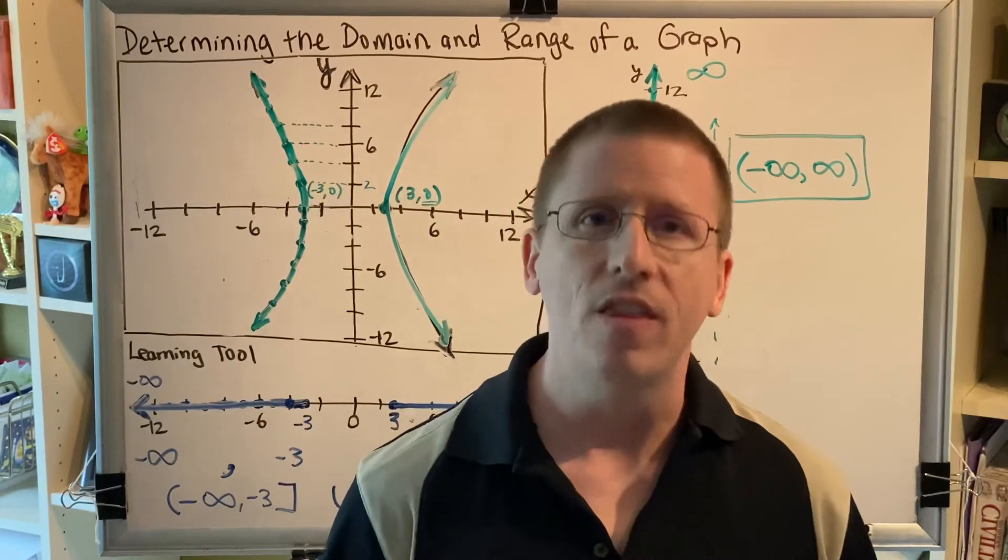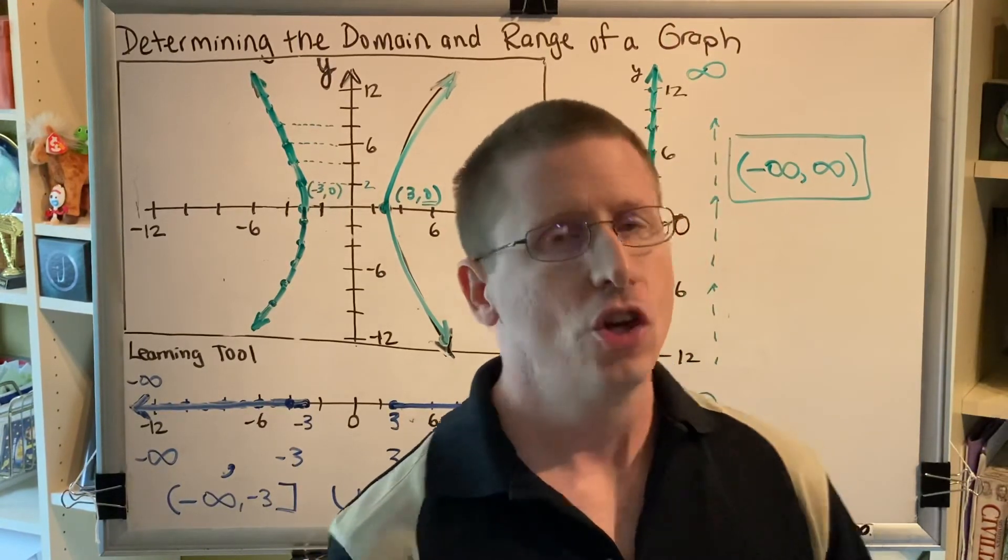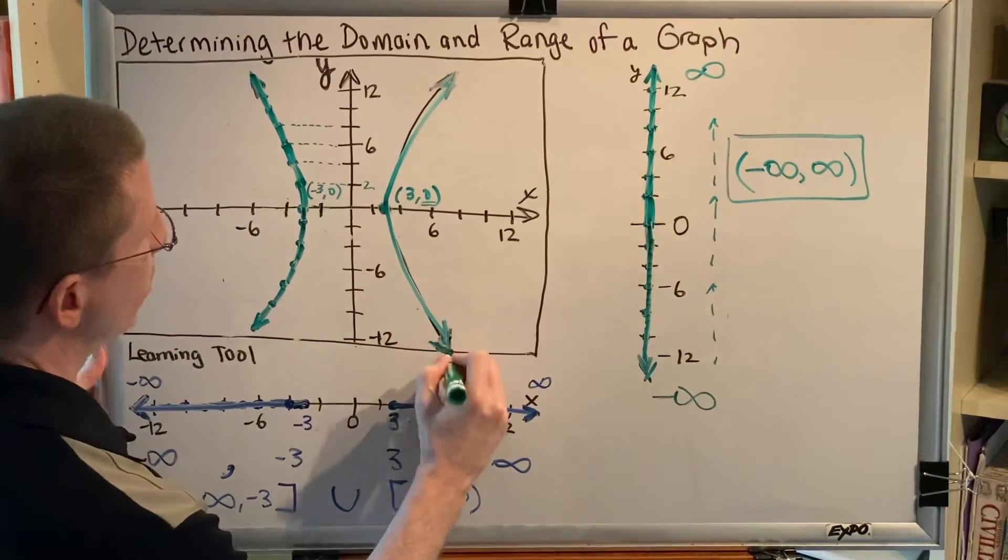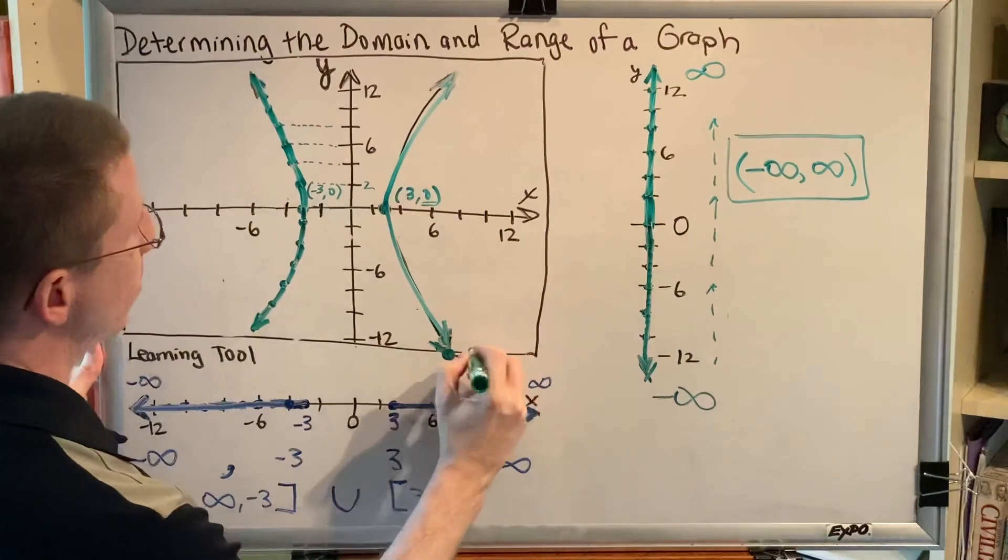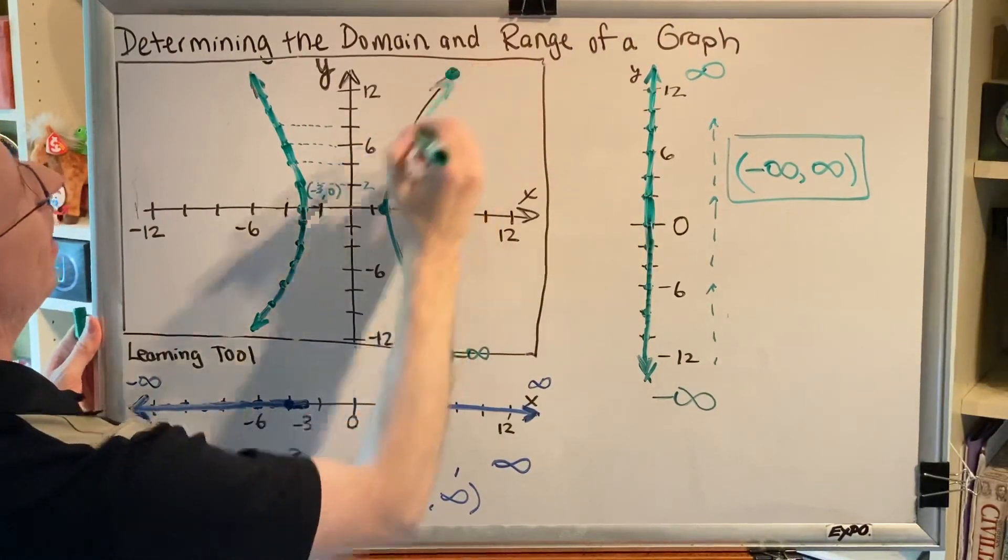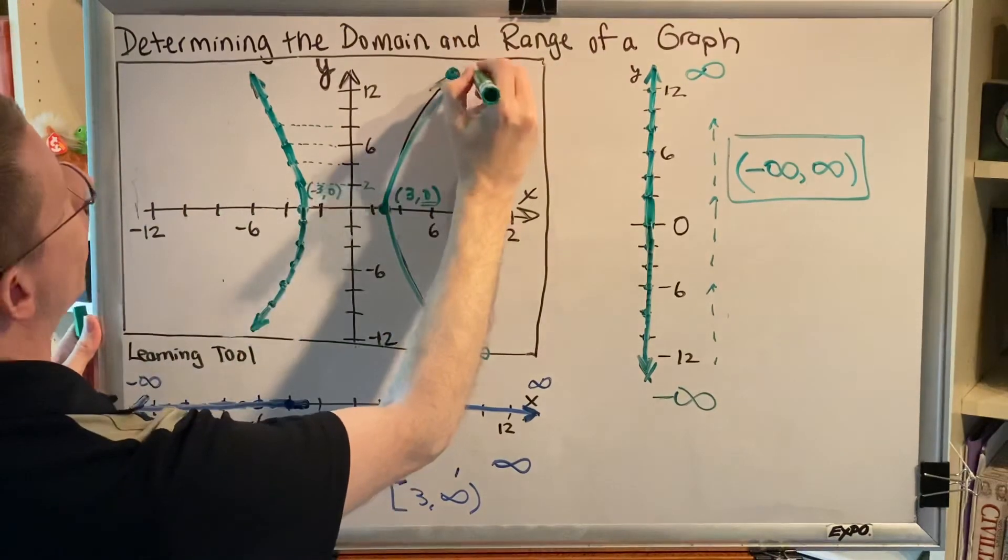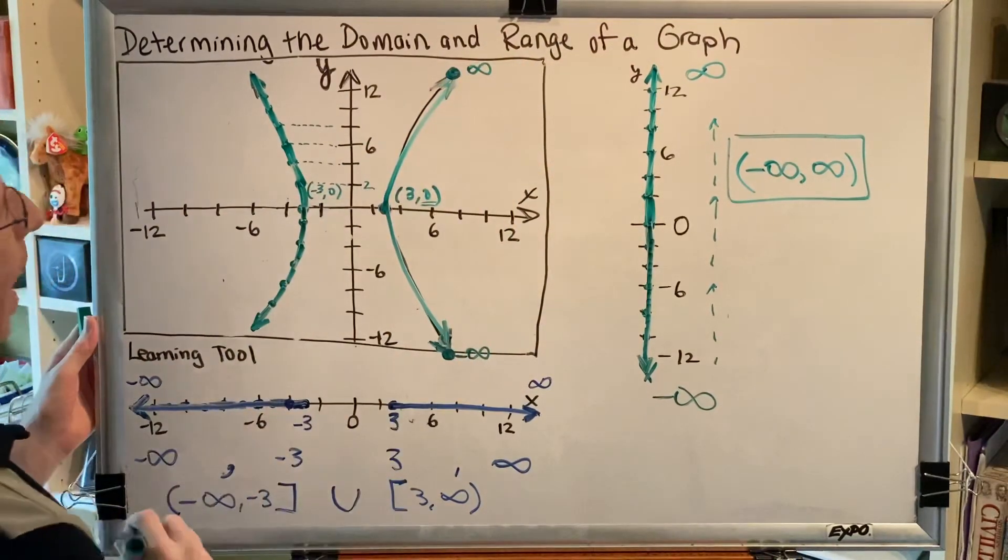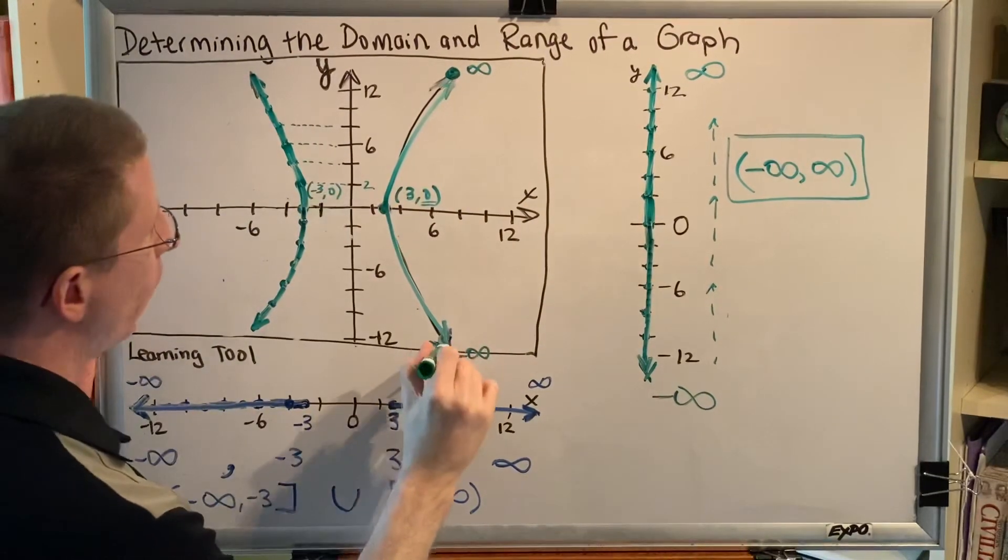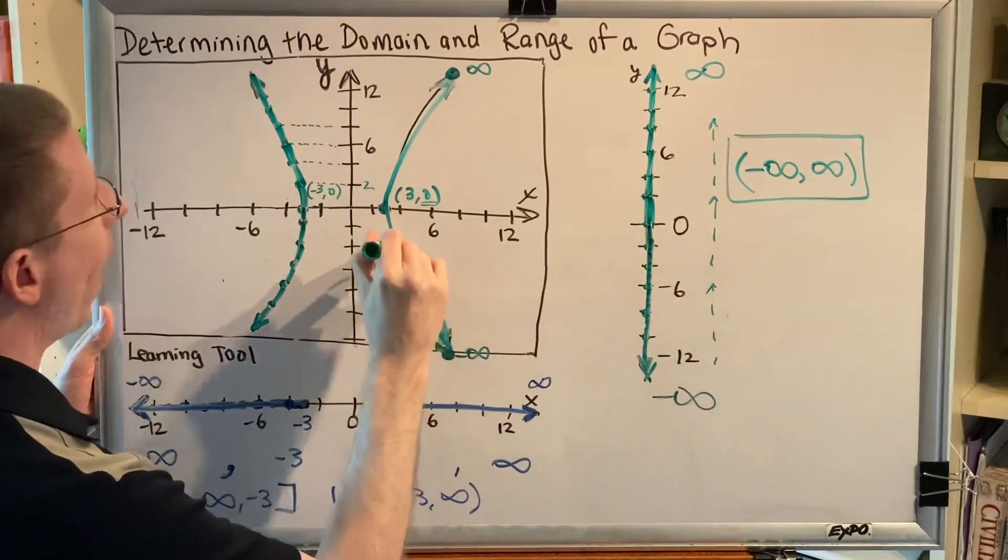Let's do that very quickly. The point furthest down would be this one, and because it's going down forever, it represents negative infinity. The point furthest up would be this one, and because it's pointing up, this represents positive infinity. Can we trace a path from the lowest dot to the highest dot by moving along our curve without picking up our marker? The answer is yes.